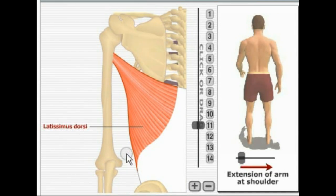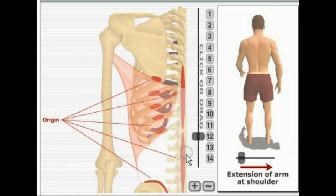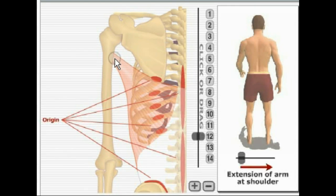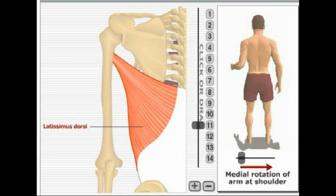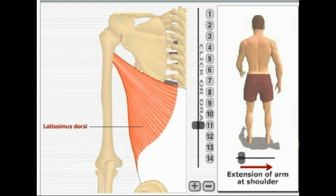Here we have one of the primary muscles of the back, the latissimus dorsi. It originates on the spinous processes of vertebrae T6 all the way down to the sacrum and inserts on the intertubercular sulcus of the humerus. It has several actions: adduction of the humerus, medial rotation of the humerus, and extension of the arm at the shoulder.